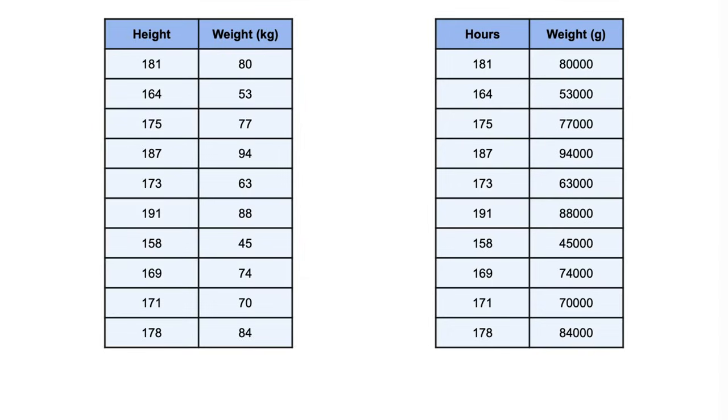For instance, if we were to compare the correlation we get when we use the weights in kilograms or in grams, we would observe that we get the same score because the correlation is not affected by the scale. Also, the two variables have quite a strong positive relationship of 0.922, being close to 1.